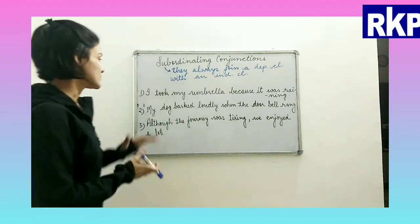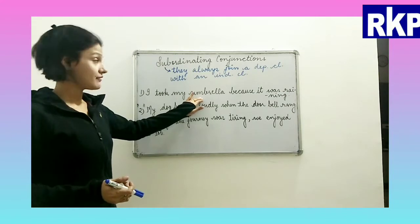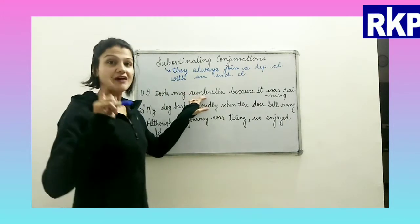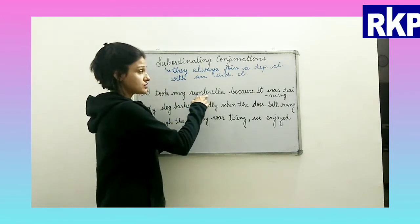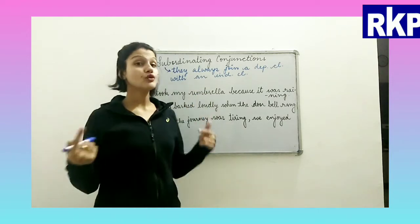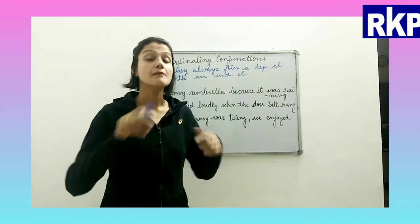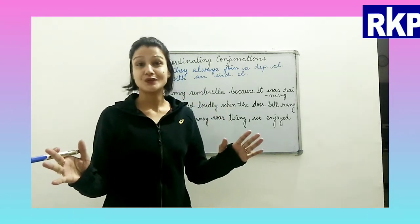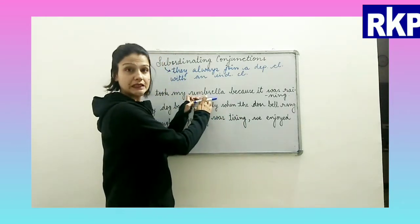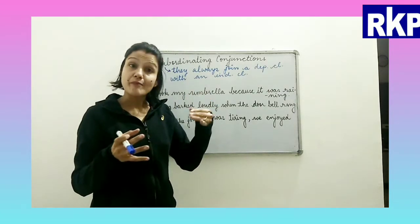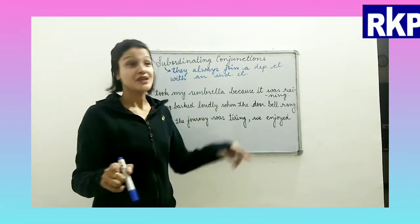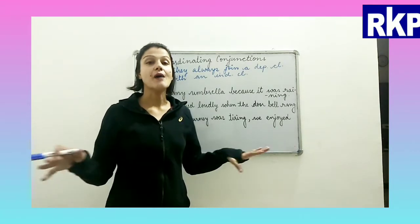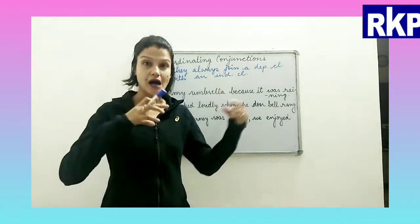I took my umbrella because it was raining. A quick pronunciation note: we never pronounce the 'b' in 'umbrella' — whenever 'm' is followed by 'b', never pronounce the 'b'. So we just say 'umbrella.'